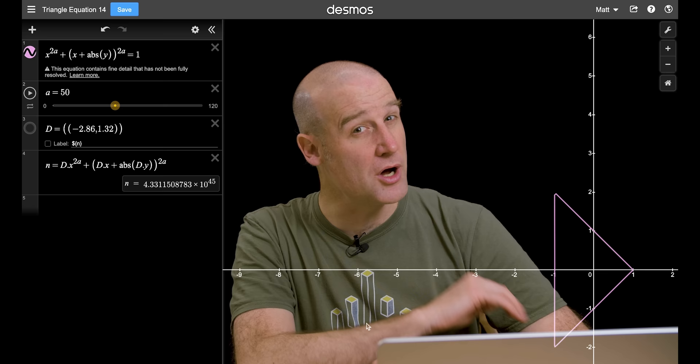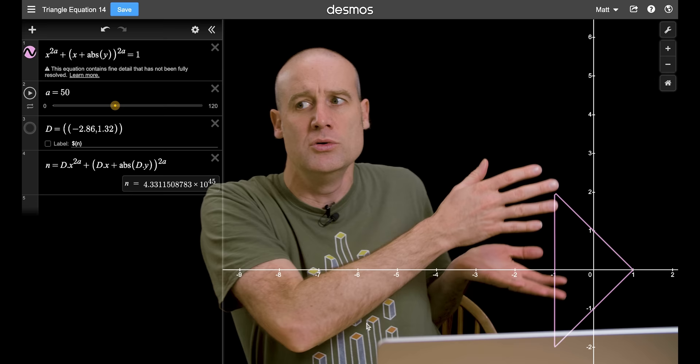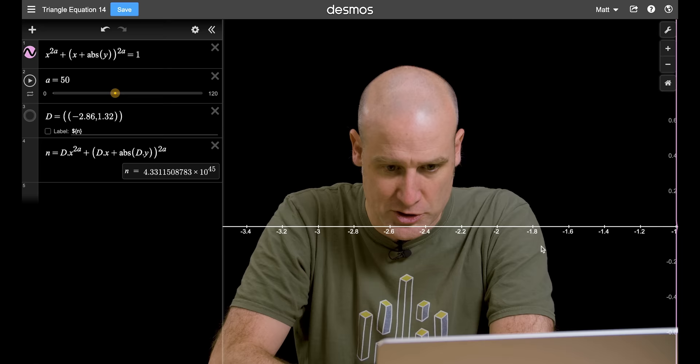Before the fully generalized triangles, however, I thought I'd show you a few of my favorite close but no triangles. Here is our first triangle, sort of. This was sent in by Muhammad Jafari. And it's a really nice triangle, even better equation. Look at that, such a nice simple equation. x to the power of 2a plus x plus the absolute value of y, and all of that to the power of 2a as well equals 1. And it gives you this triangle. I'm going to move it over here, make it a little bigger so we can all see it.